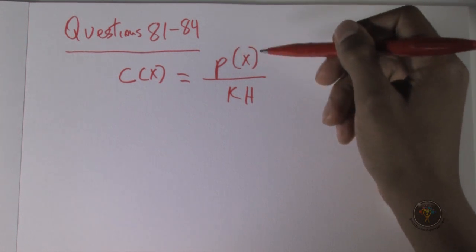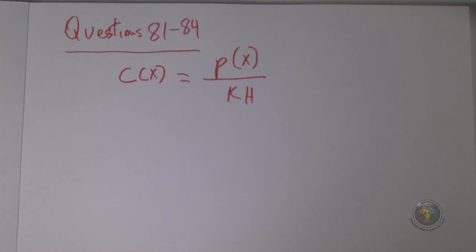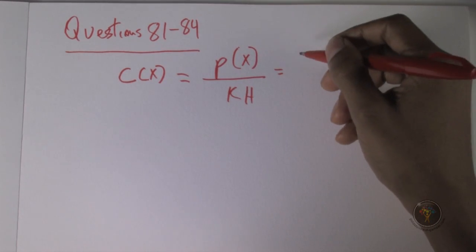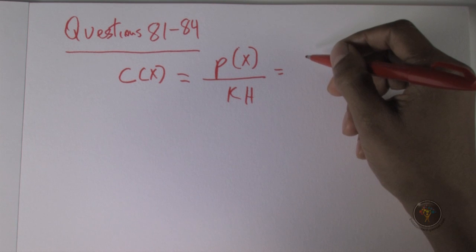Question 82: the partial pressure of argon in the atmosphere at 25°C is 0.009. Which of the following is the best estimate of the equilibrium concentration of argon in blood plasma? If we want the concentration of argon, we just have to give the partial pressure.